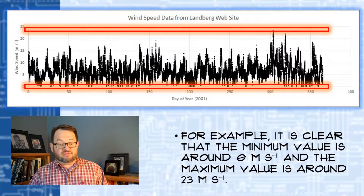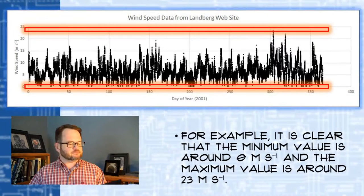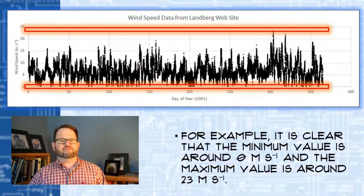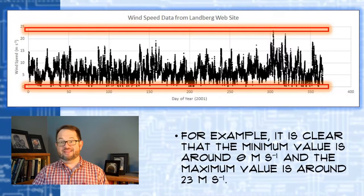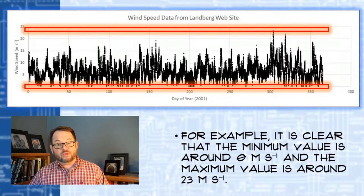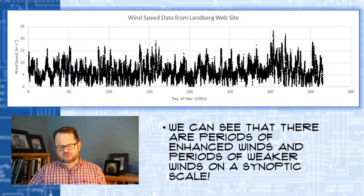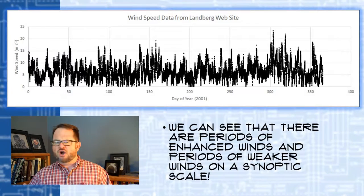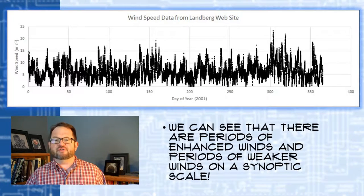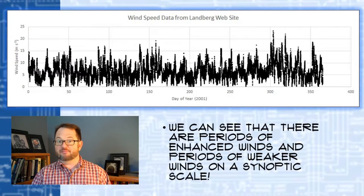This simple visualization already tells you a fair amount about what's going on in your data set. I can get a pretty good sense of the range — I can see plenty of observations where wind speed is right around 0 m/s and some as high as about 23 m/s, which is around 45 mph. I can also see periods where winds are stronger and periods where they're weaker. With closer examination, these enhanced wind periods occur every few days — maybe every five days — which are synoptic-scale weather events: cyclones and anticyclones passing the anemometer location.